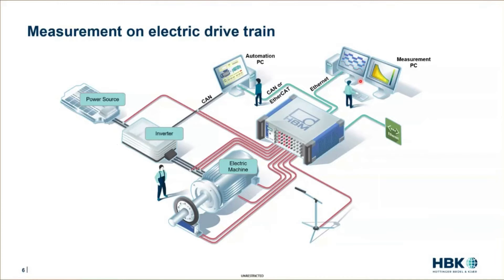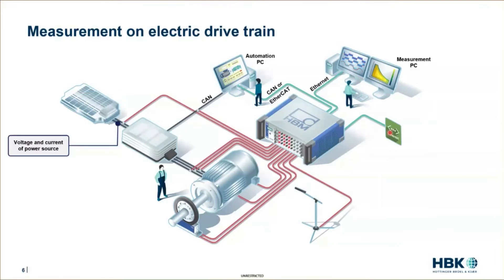The first important question is: what signals should be measured in this electric drive train? If you think about electric vehicle applications, we have a battery. Therefore, we want to measure the DC signals at the output of the battery. In reality, we will also see some transients depending on whether operating points are changing, and some reflections from the inverter causing high frequency components. But in the ideal case, these are DC signals.